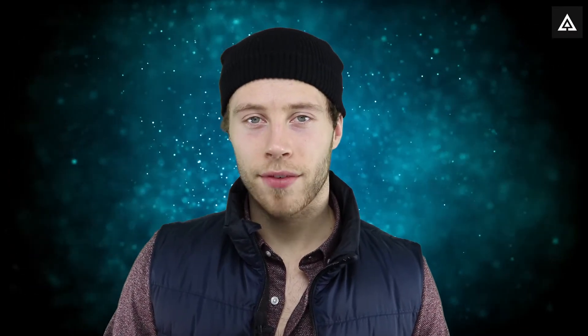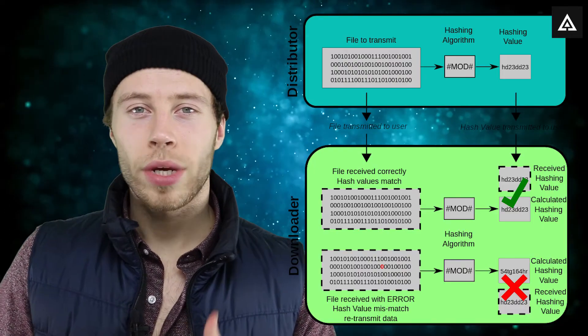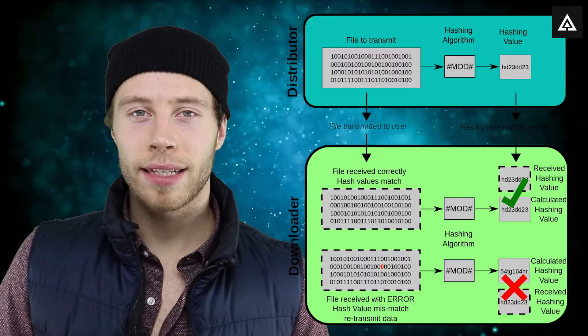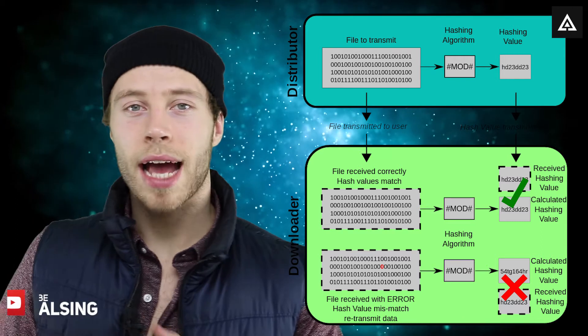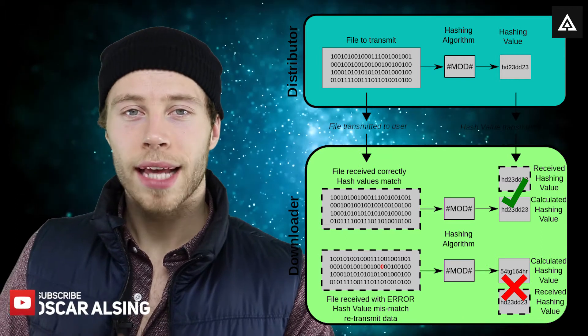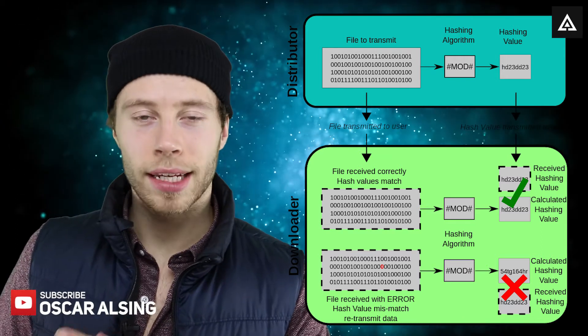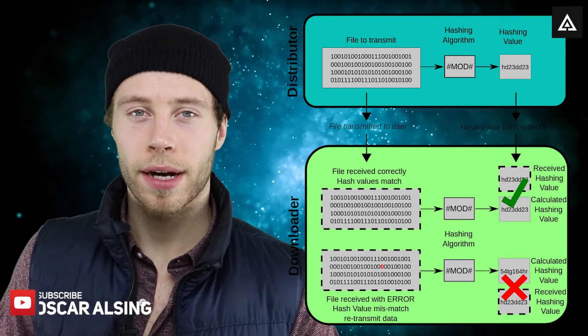To help you understand more about how hash functions work, I want to give you an example. MD5 is a very commonly used hash function, and if you look at the picture here you can see how it takes some data and creates a hash from it, and this hash can later be used for comparison.